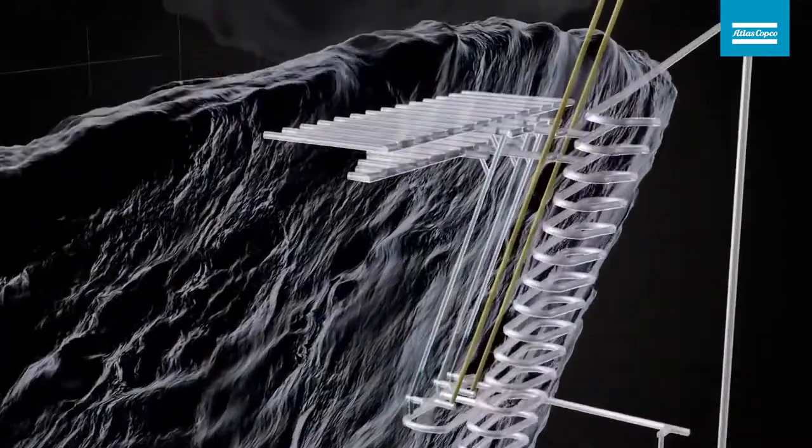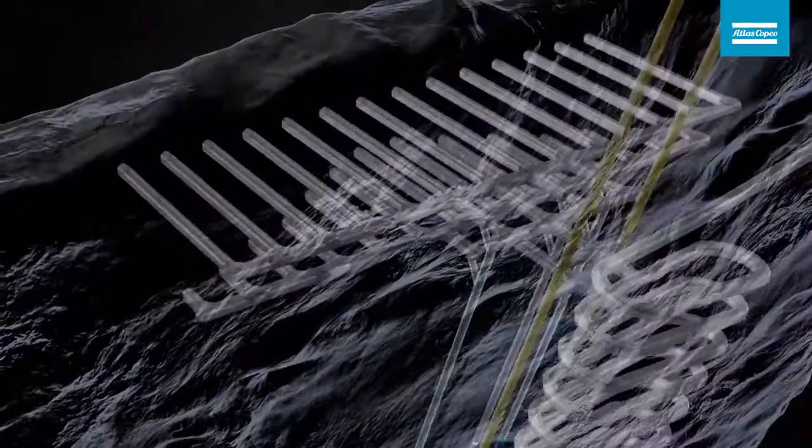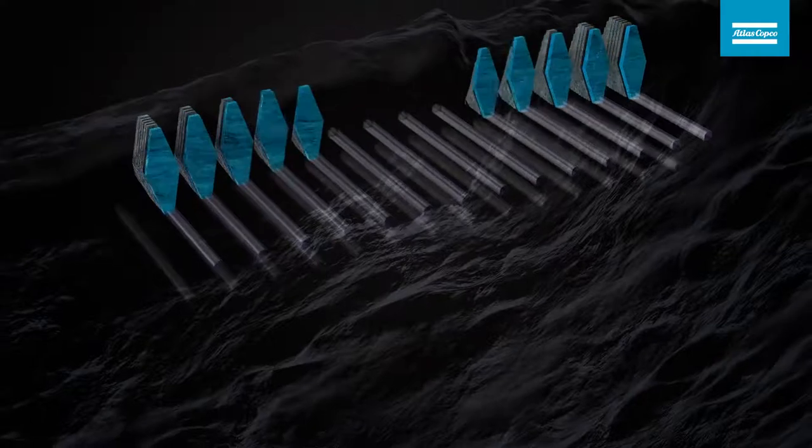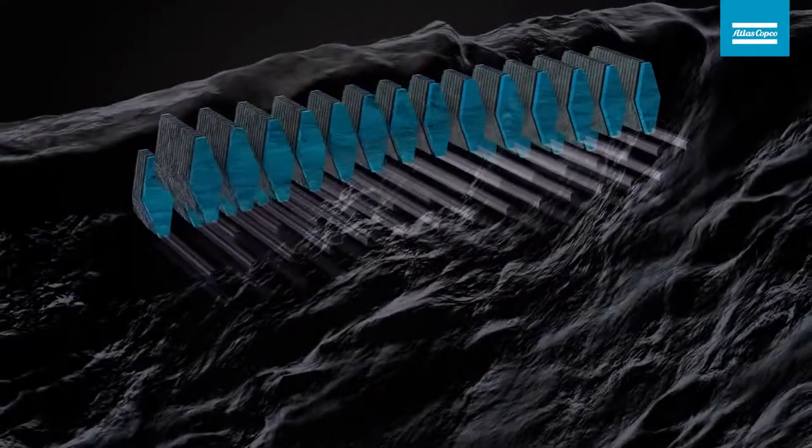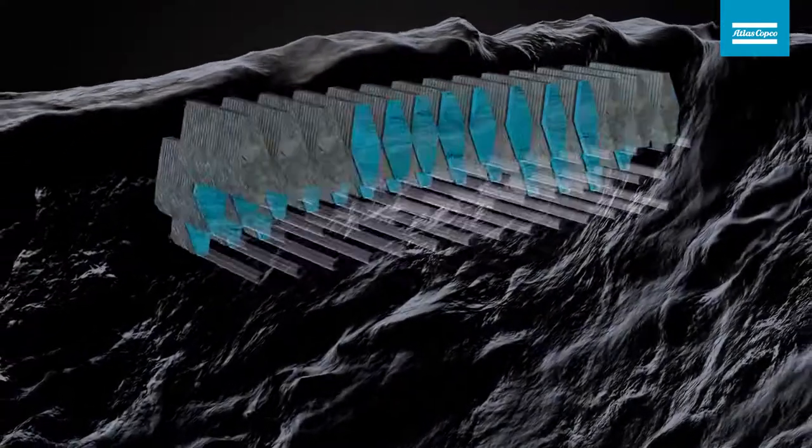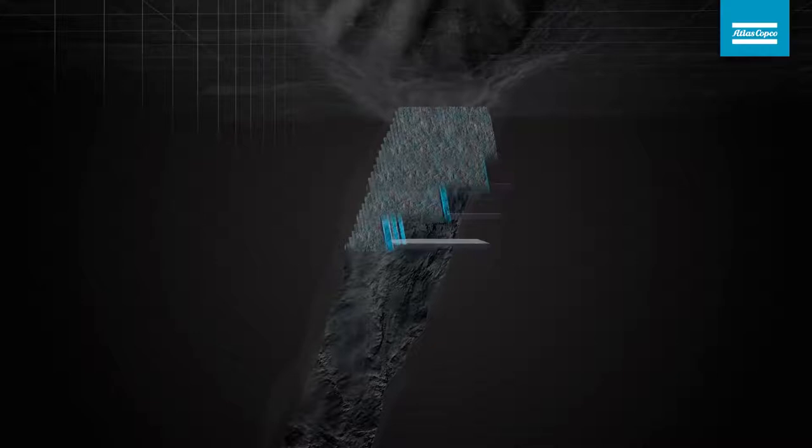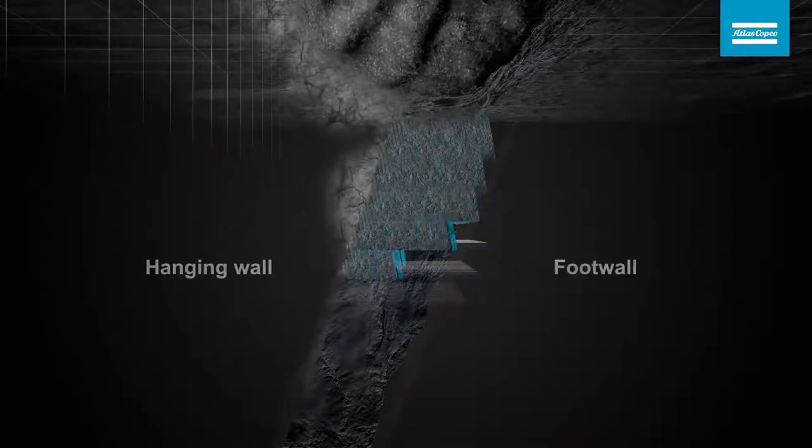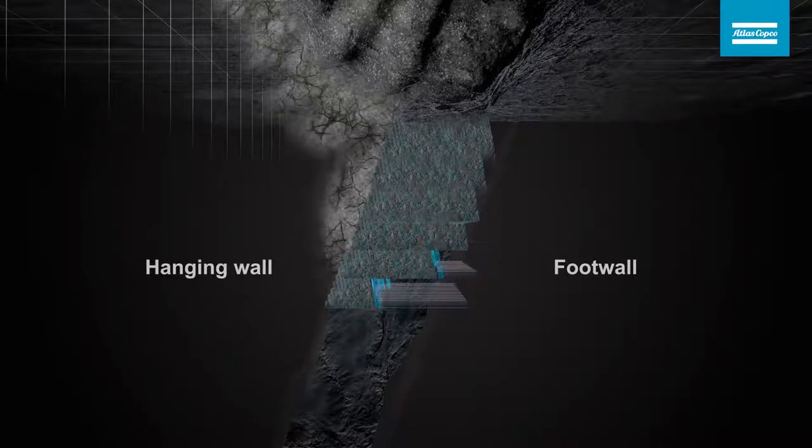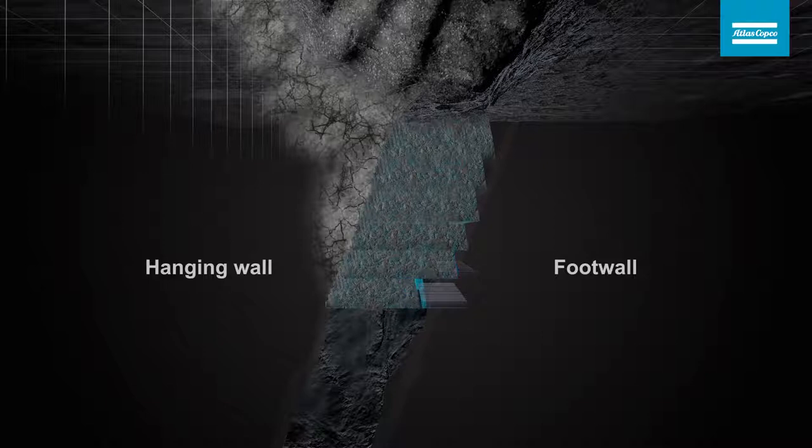Mining starts at the top of the ore body and progresses downwards in a safe sequence. It is a productive mining method where all of the ore is fragmented by blasting and the host rock in the hanging wall of the ore body caves.